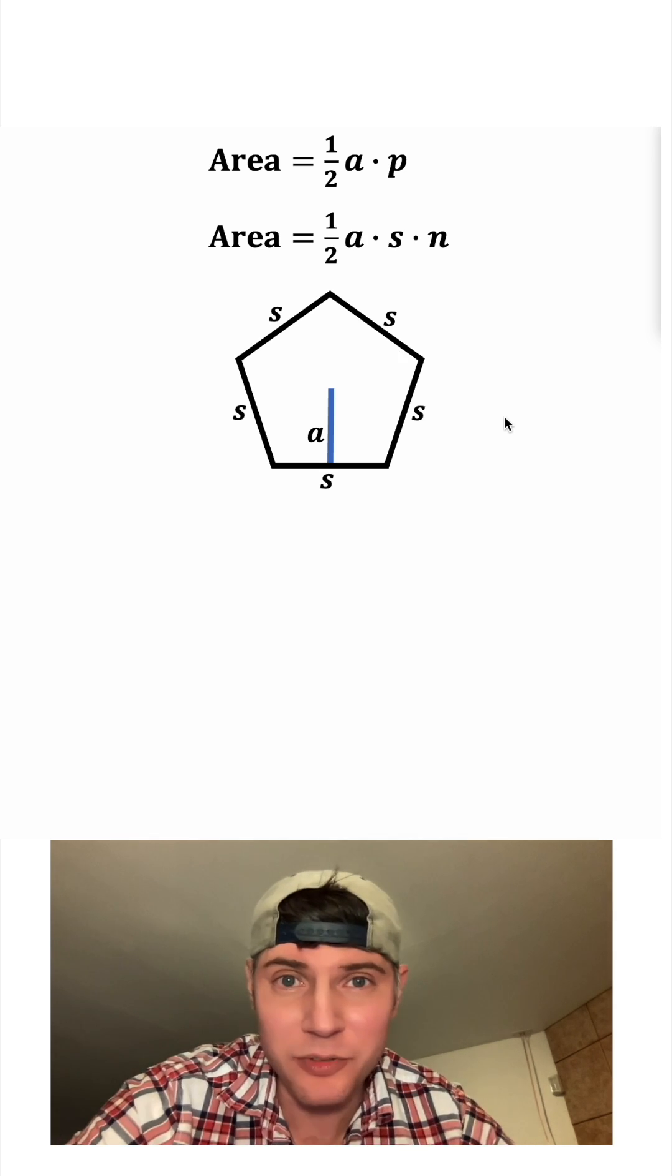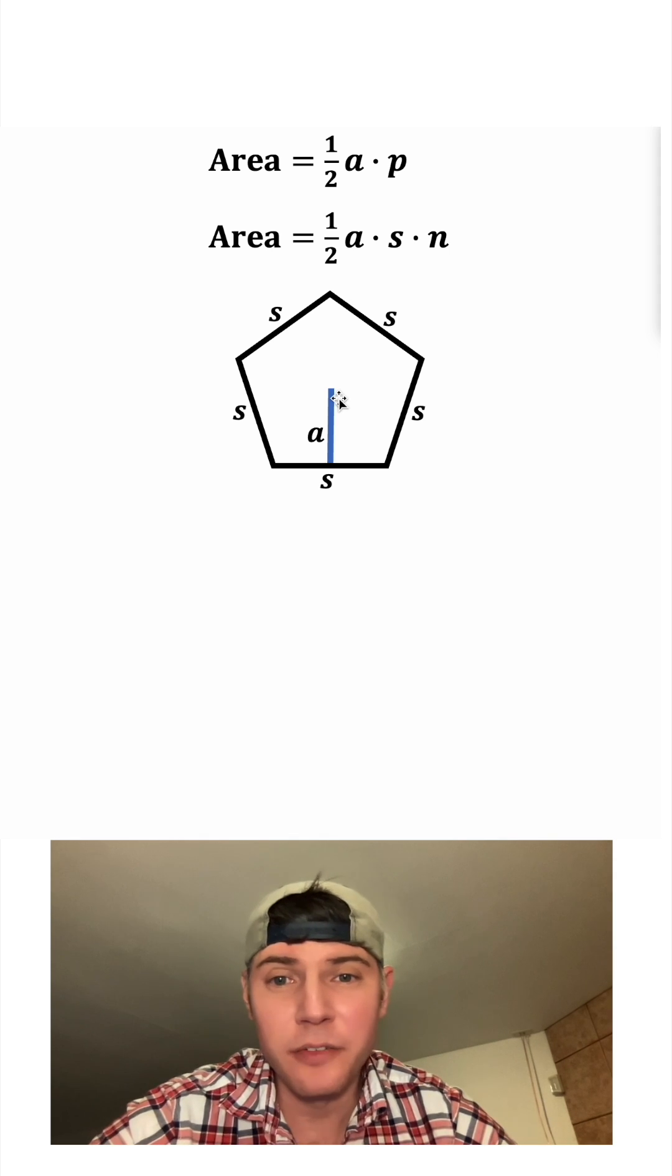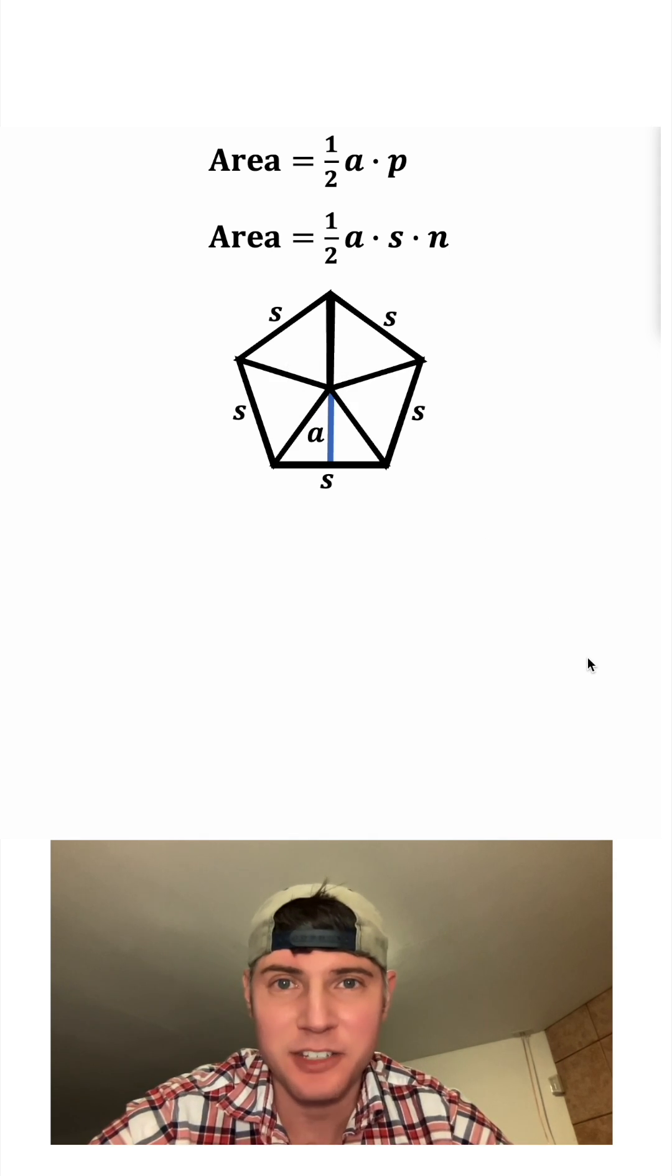Would you like to see a visualization for why this formula works? From the center of the regular polygon, let's cut it into N isosceles triangles.